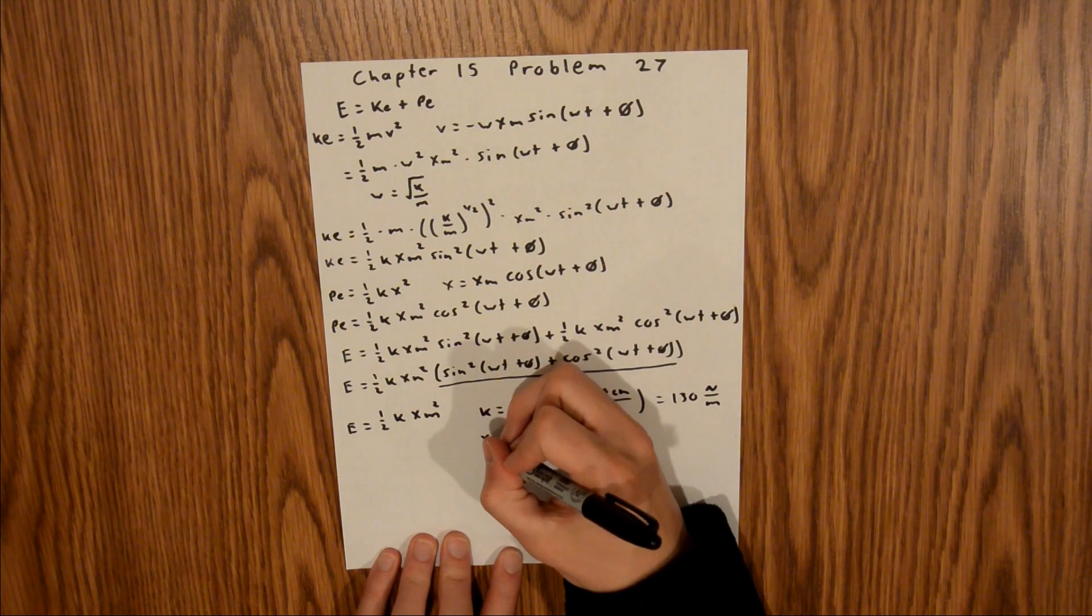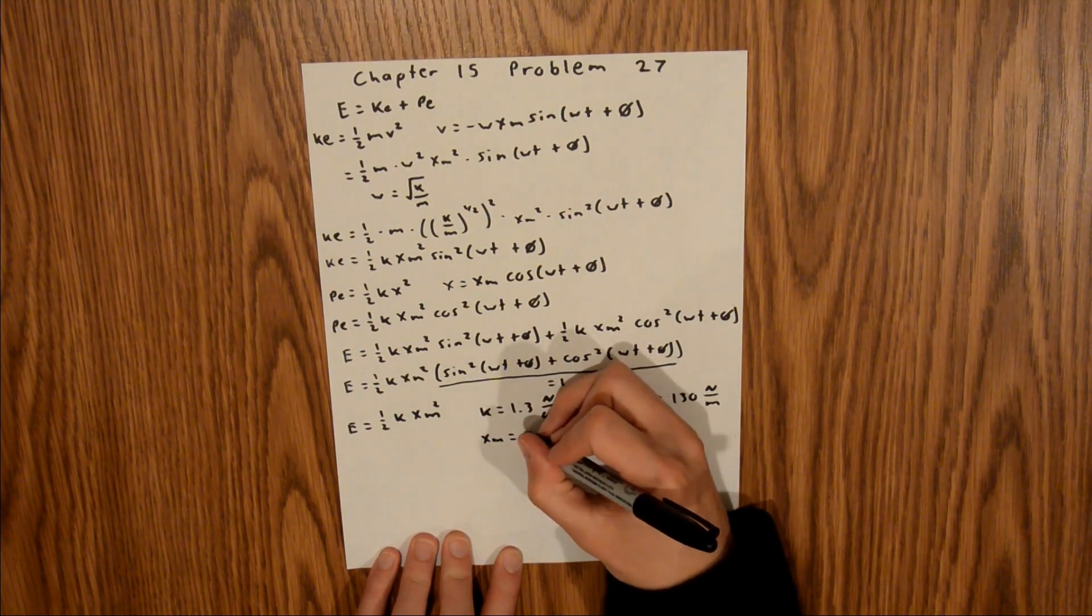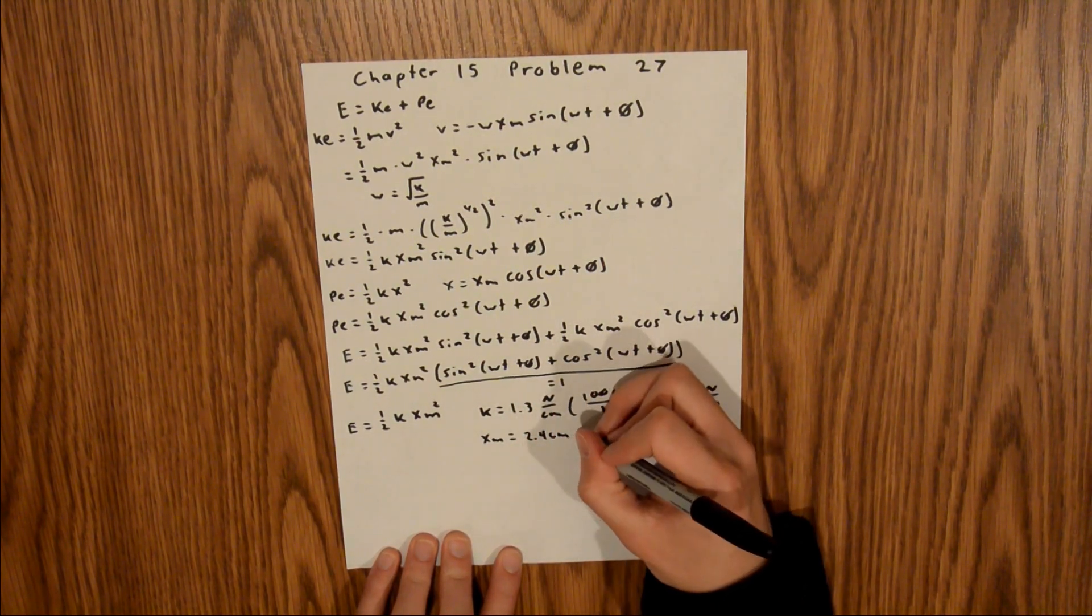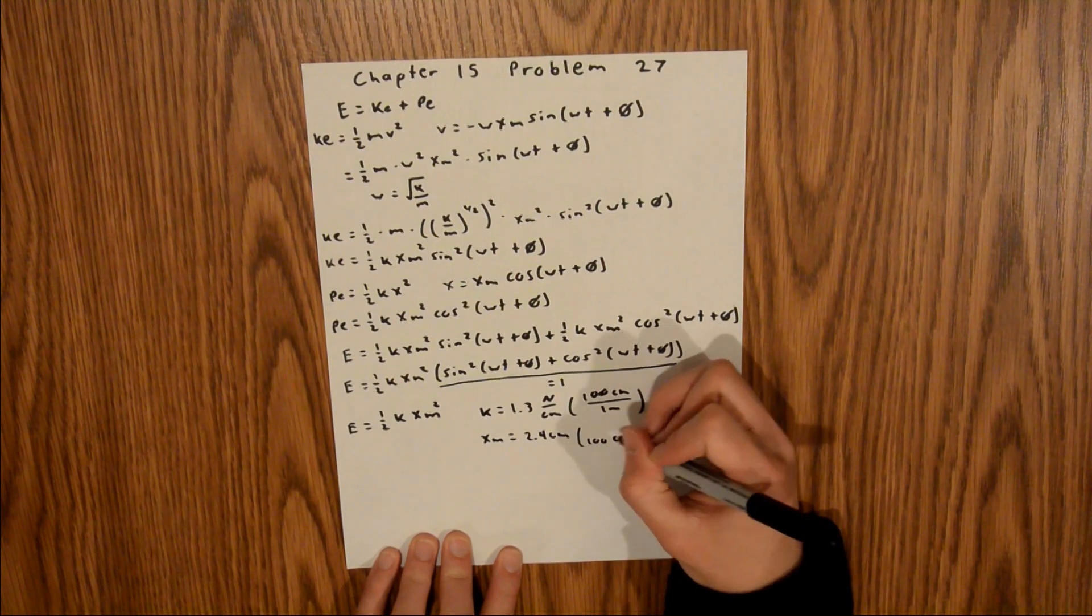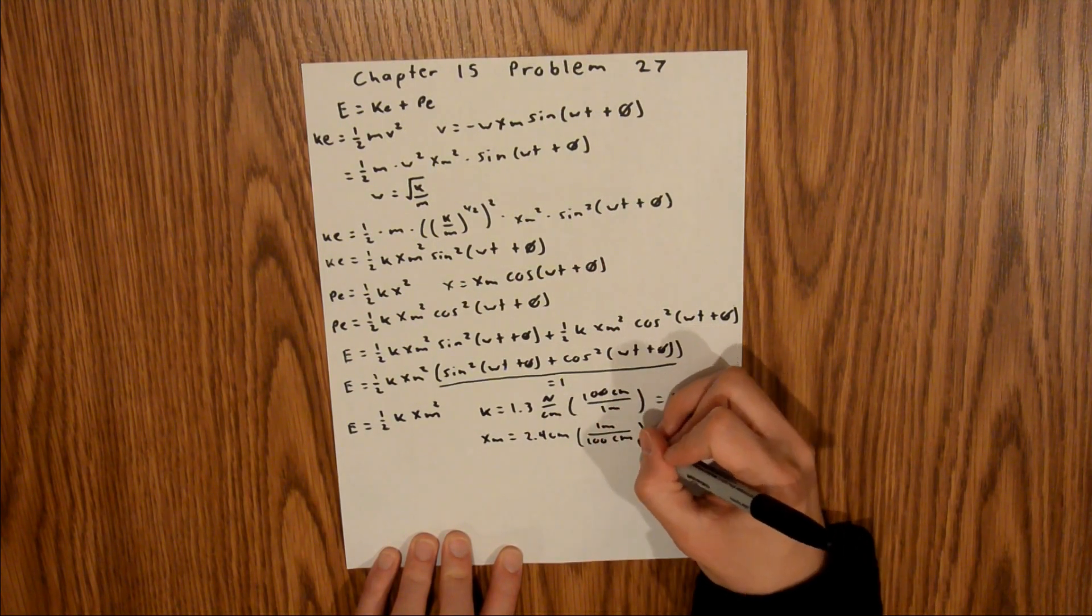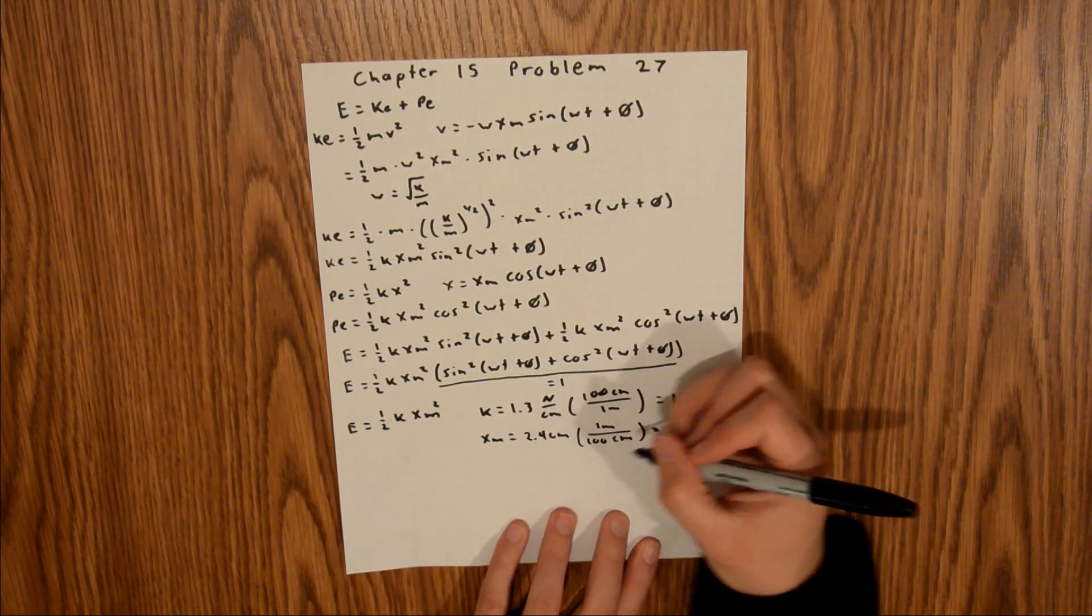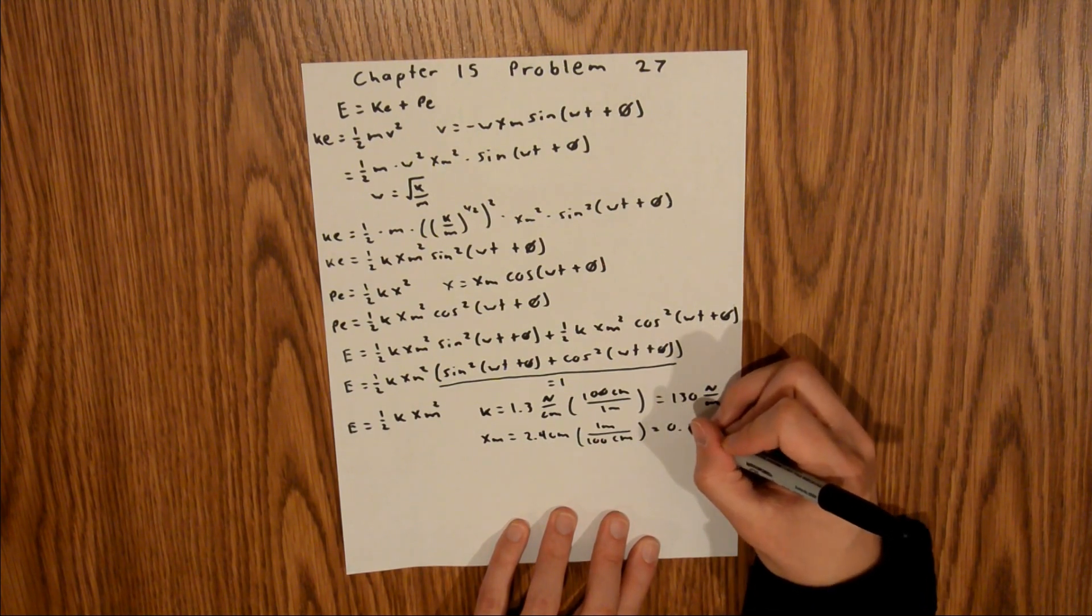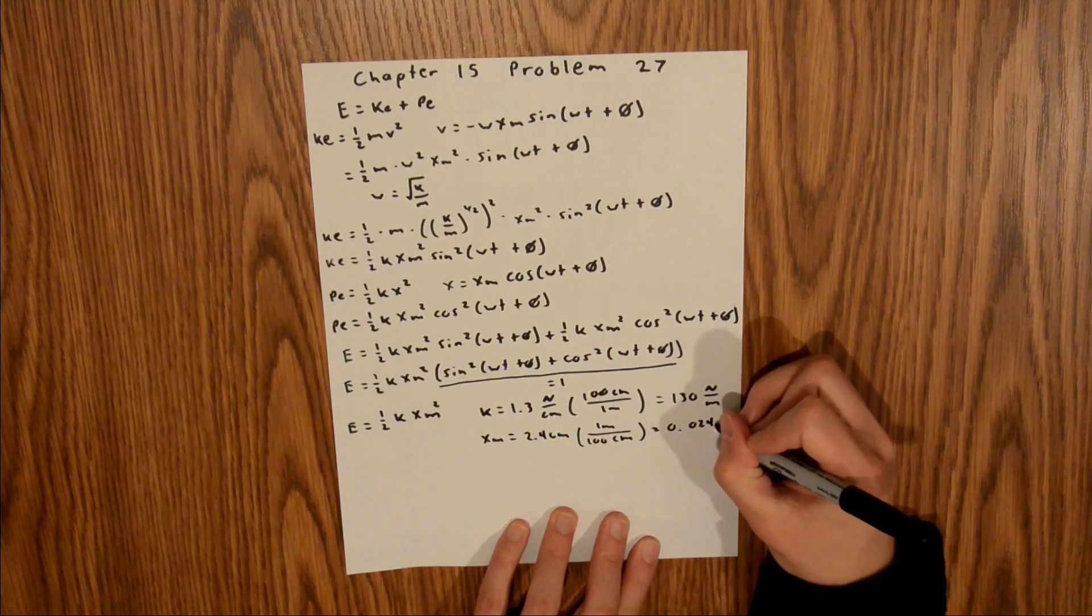And then we're also given xm, which is equal to 2.4 centimeters. Again, we know that 100 centimeters are in one meter. And so that is going to be equal to 0.024 meters.